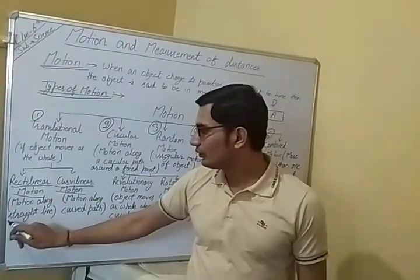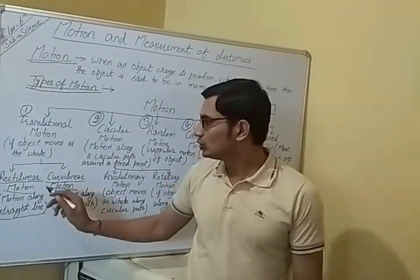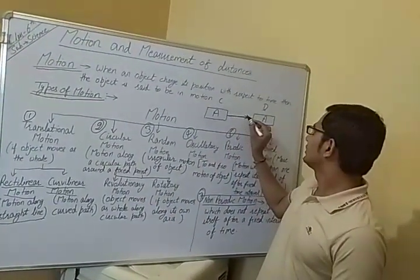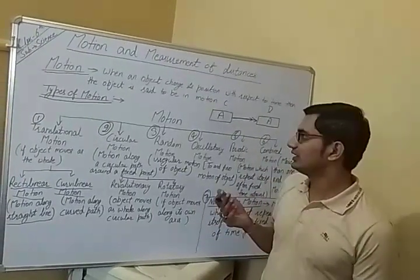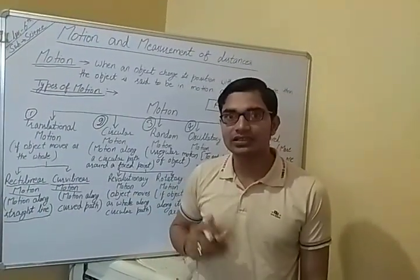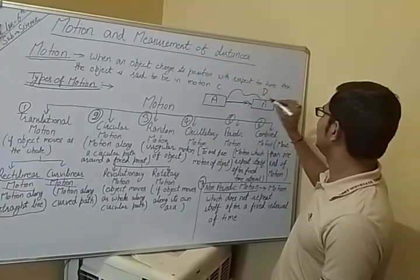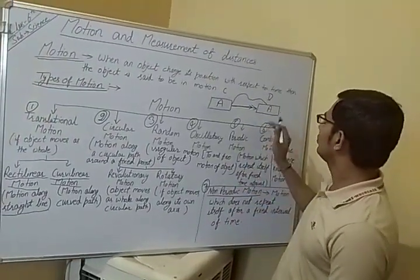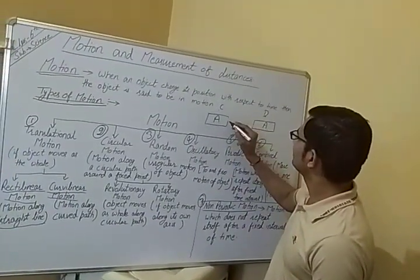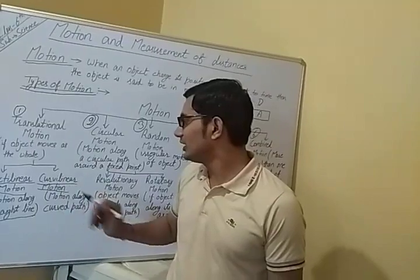If translational motion occurs along a straight line, then the motion is said to be rectilinear motion — the object travels or changes position along a straight line. Curvilinear motion: if the object covers its distance or changes position along a curved path, that is known as curvilinear motion.